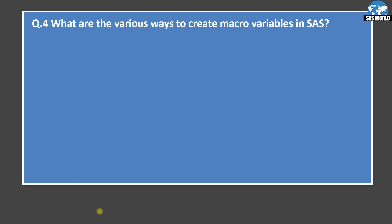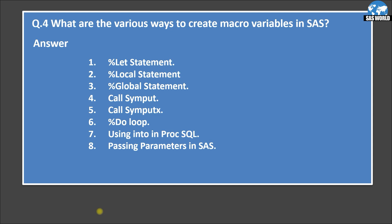What are the various ways to create macro variables in SAS? This question is always asked in every interview. The various ways are: %LET statement, %LOCAL statement, %GLOBAL statement, CALL SYMPUT routine, CALL SYMPUTX routine, %DO loop, using the INTO clause in PROC SQL, and passing parameters in SAS macros. You should be aware of all eight options, as interviewers can ask about any of them.